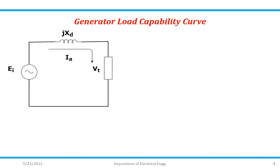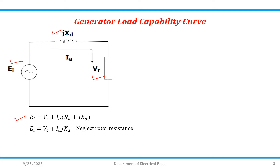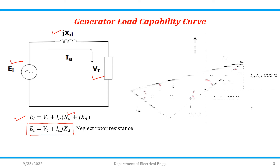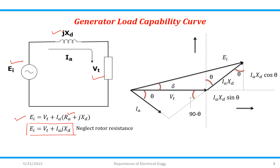Let us consider this diagram. This is your EI. This will be your terminal voltage VT. J into XT is the reactance, and IA is the current which will flow through this. The mathematical expression is: EI will be equal to VT plus IA into bracket RA plus J into XT. Now, if I neglect the RA term, then I can write EI equal to VT plus IA into J·XT. It is very easy to draw a phasor diagram from this.